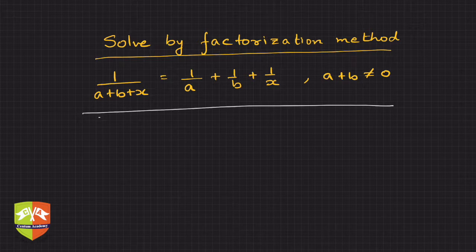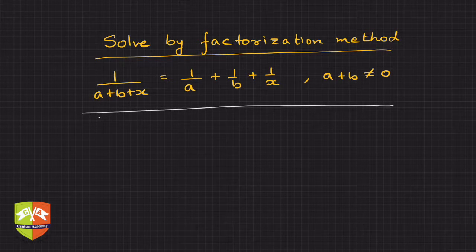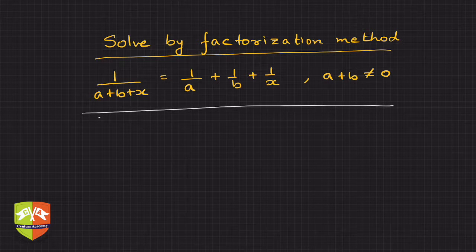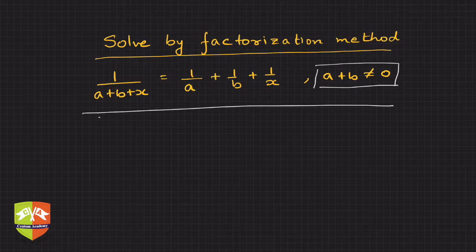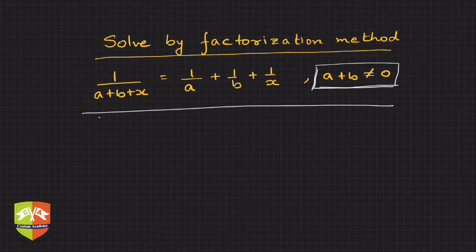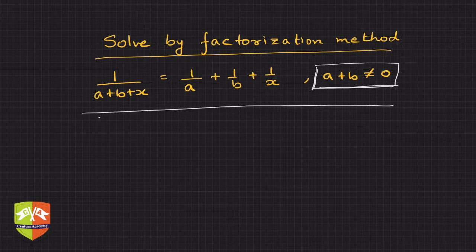The question says: one upon (a + b + x) equals one upon a plus one upon b plus one upon x, and it's given that a plus b is not equal to zero. You will realize in a little while why this condition is given. This is the equation and you have to solve it.